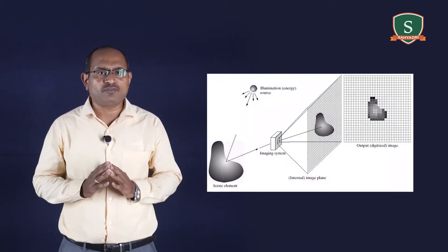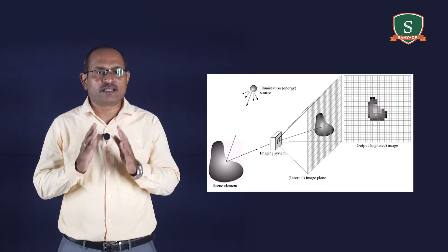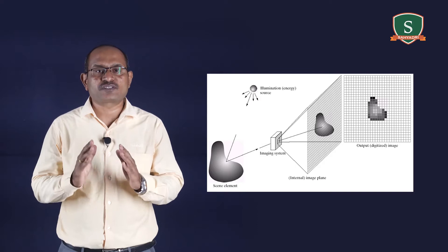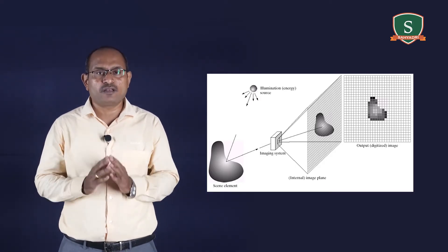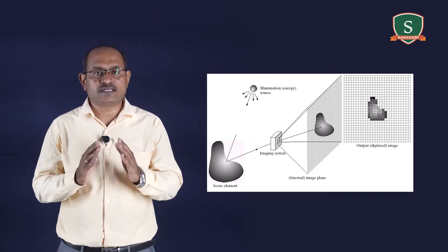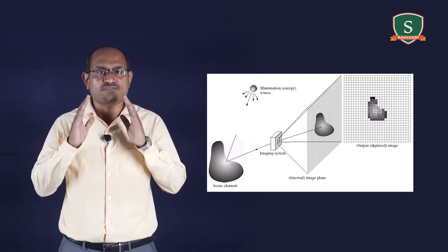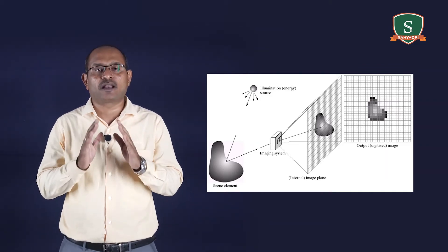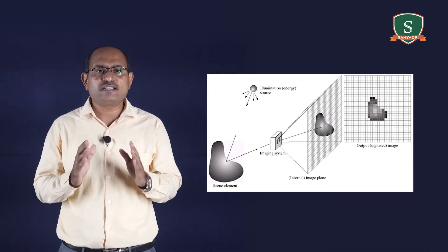The following figure is an example of the digital image acquisition process. The figure consists of the energy source, an element of scene, and projection of a scene into an image. This type of arrangement is found in digital cameras. A typical sensor of these cameras is a CCD array, which can be manufactured with a broad range of sensing properties and can be packed in a rugged array of 4000 x 4000 elements or more. CCD sensors are used widely in digital cameras and other light sensing instruments.